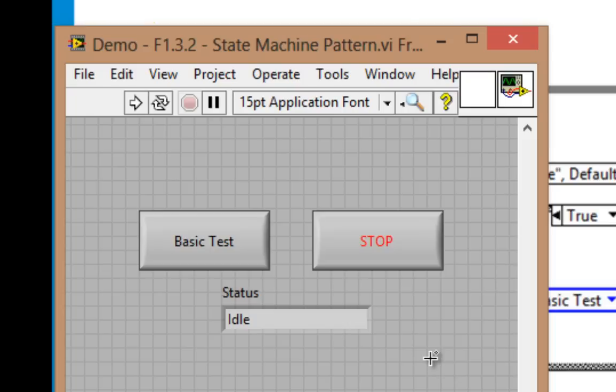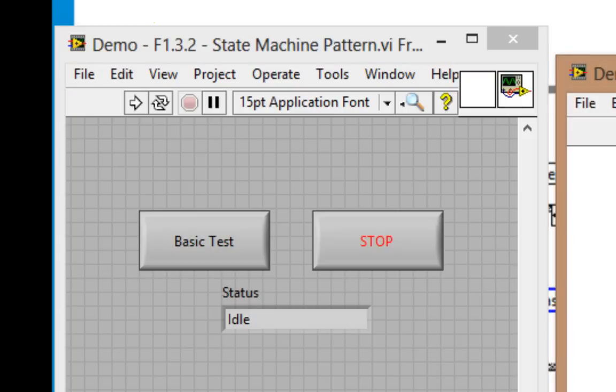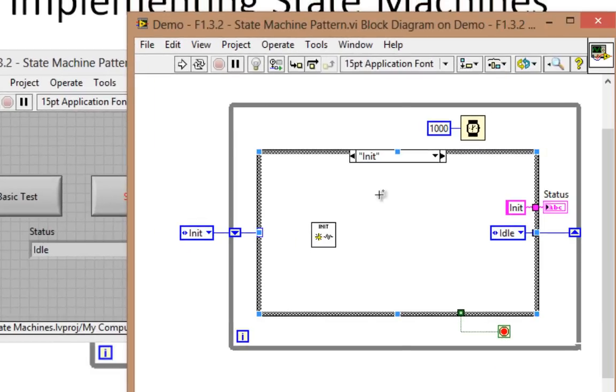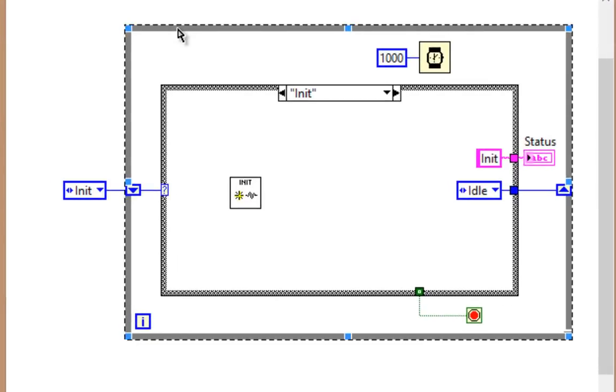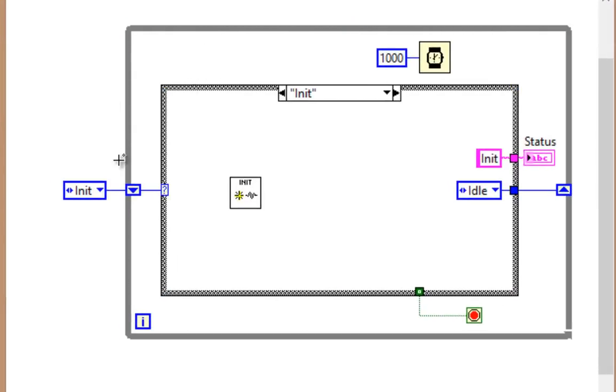Let's see how this is implemented on the block diagram. Here's the infrastructure of a state machine. We have a while loop with a case structure inside, a shift register, with the output of the shift register going to the case selector terminal of the case structure. And then we also have this, which is an enum constant.